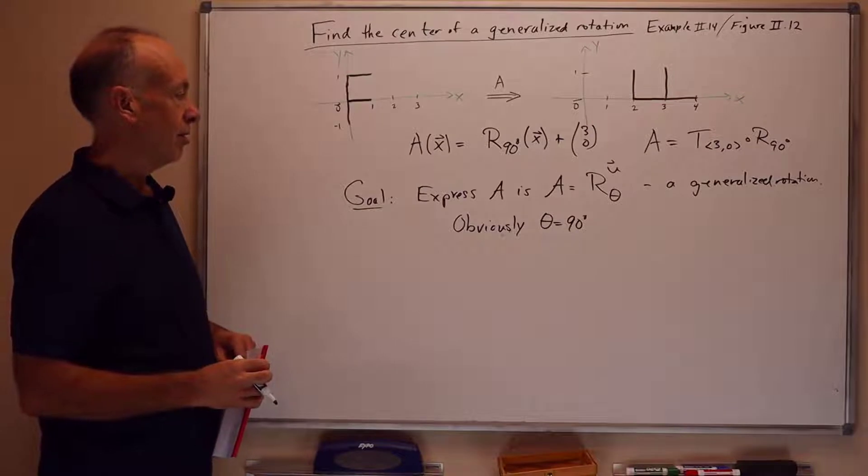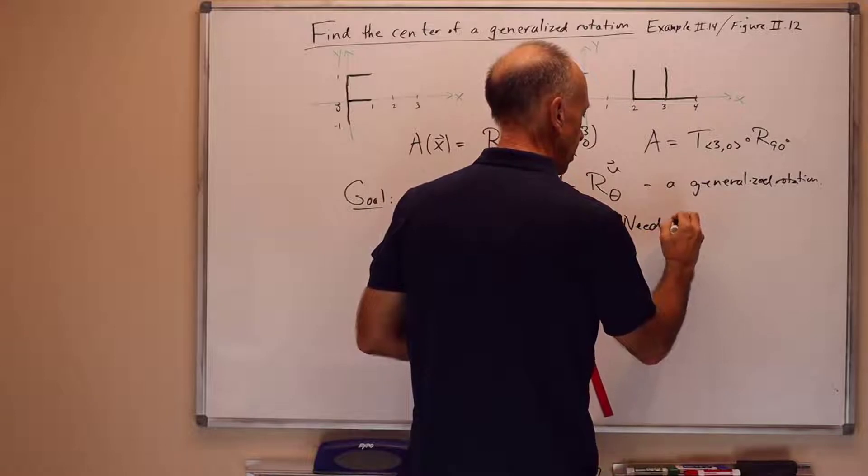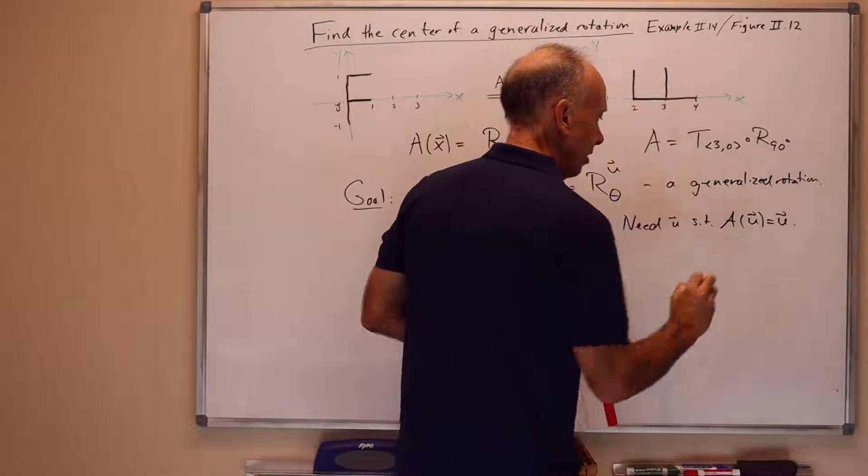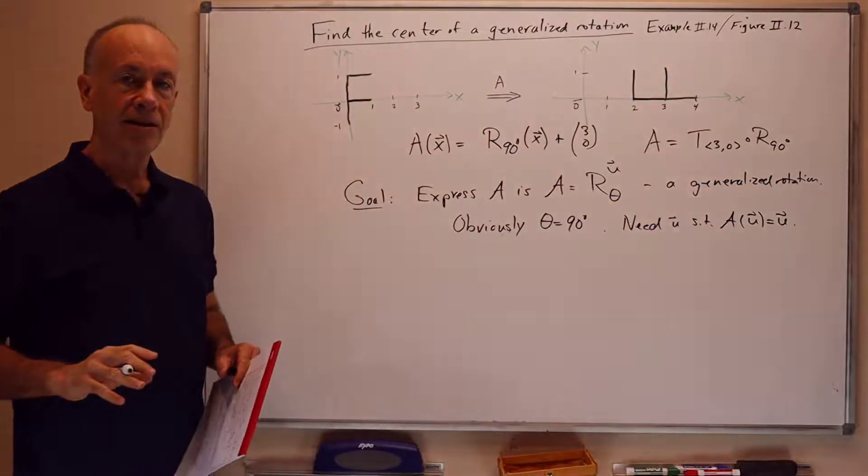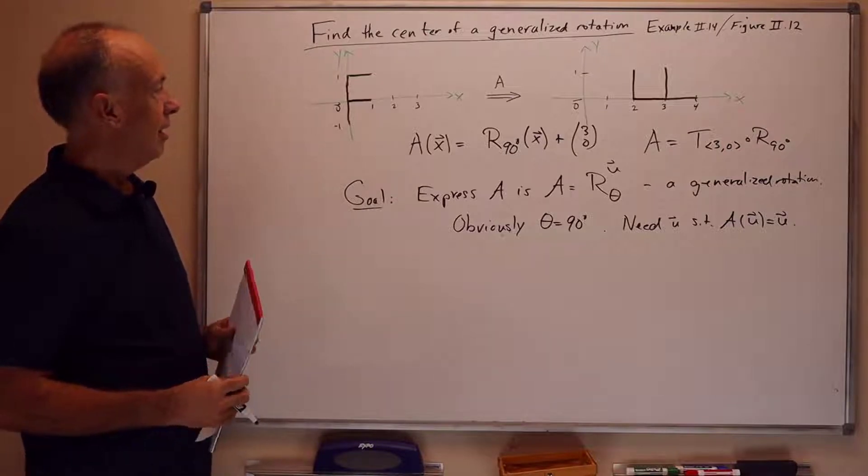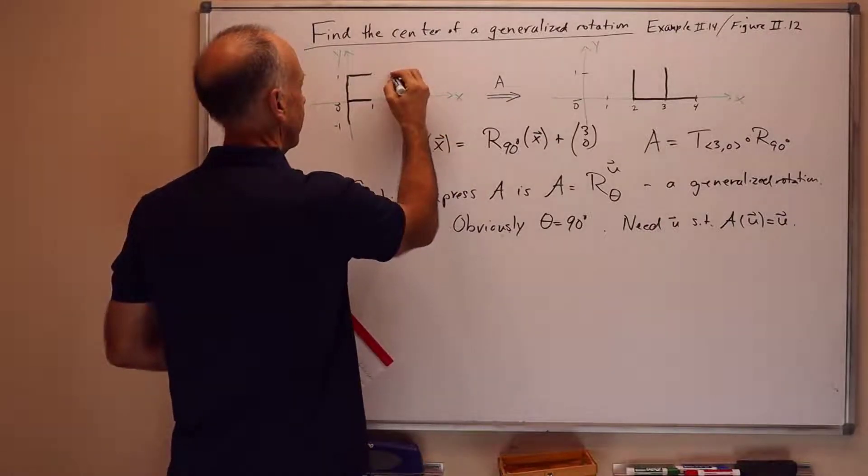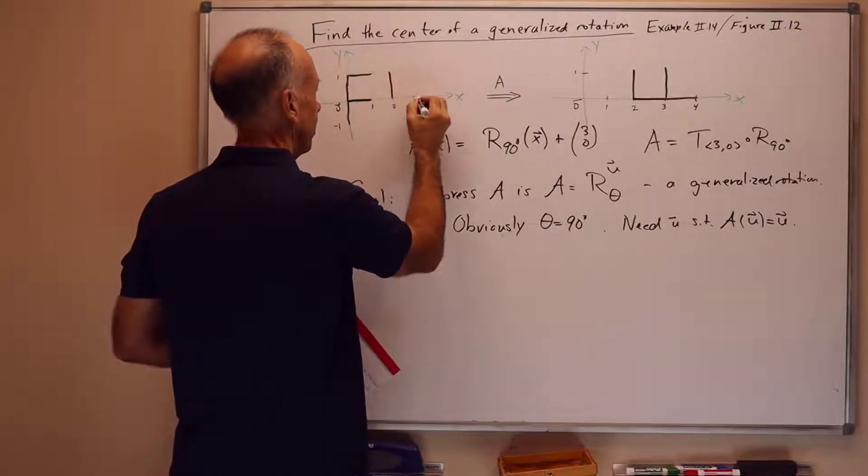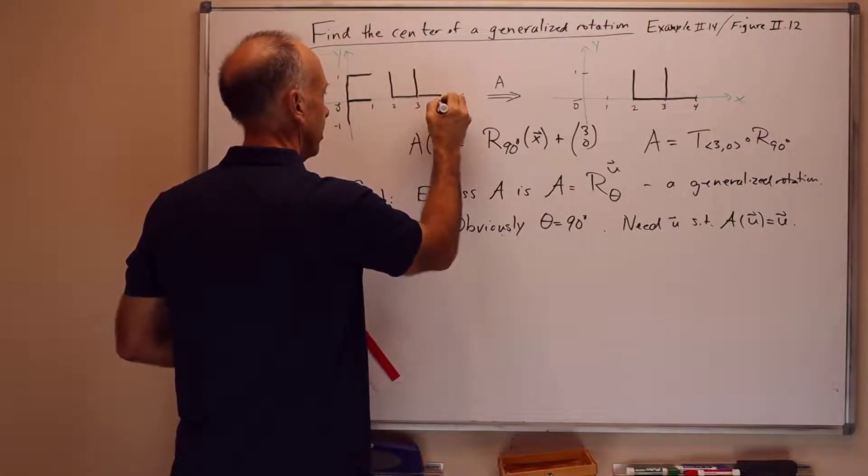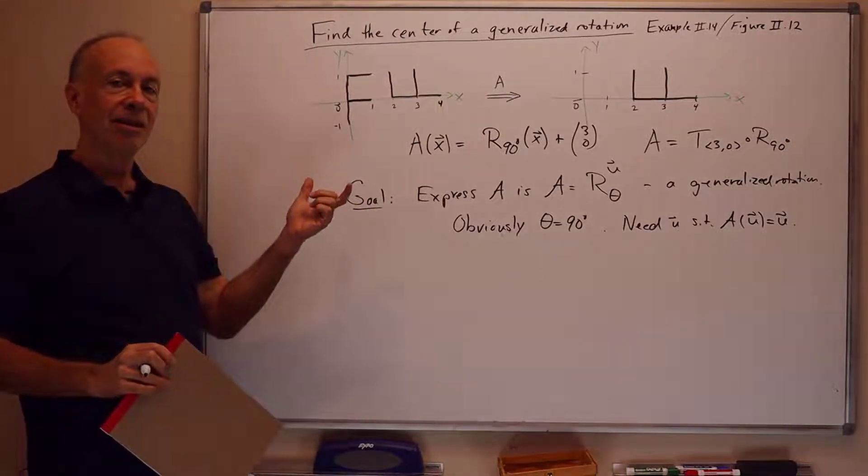But what's not so obvious is where to pick u. So we need u such that A of u equals u, and then this will be the desired center of the generalized rotation. So to do this, it can be a little hard to picture this. Now we might start off by a good first step is to draw the image f on the same drawing as the domain f.